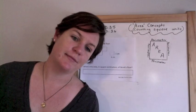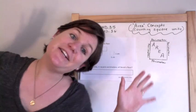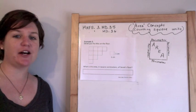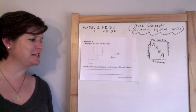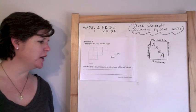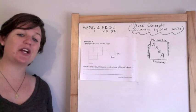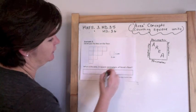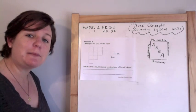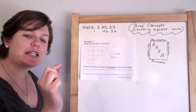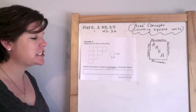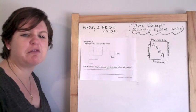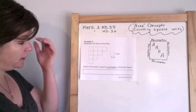Let's go to number 2. Derek put tiles on the floor. What is the area in square centimeters of Derek's floor? This is a little small because centimeters aren't that big — Derek is basically an ant making an ant floor.